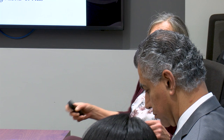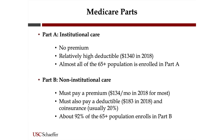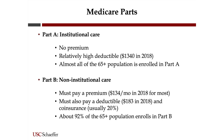Part A is institutional care. There's no premium, and it's a relatively high deductible. Almost all of the 65-plus population is enrolled in Part A — you just sign up. Part B is non-institutional care. This includes physician visits, any supplies received, any injections, and Part B drugs. For Part B, you have to pay a premium to enroll — about $134 a month for most in 2018, graded on a scale so higher income means a higher premium.